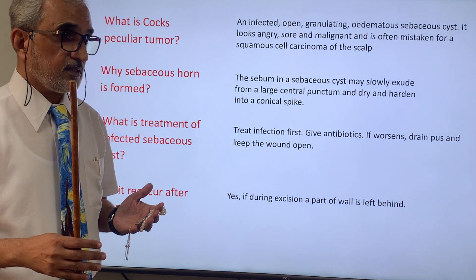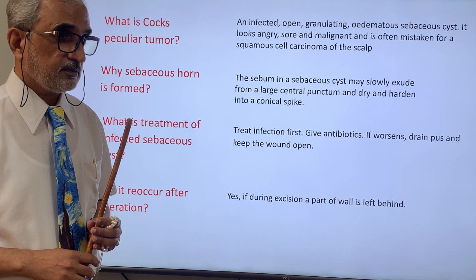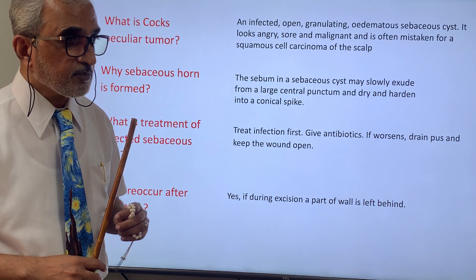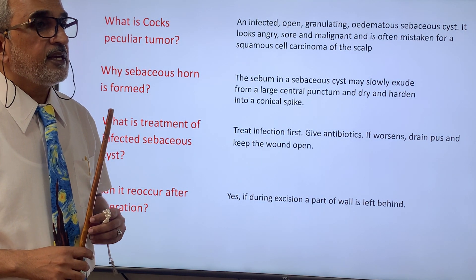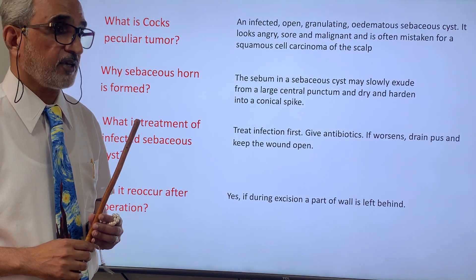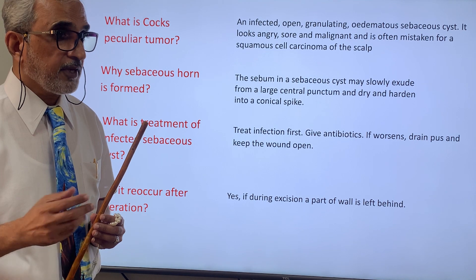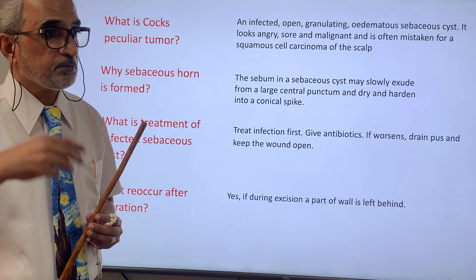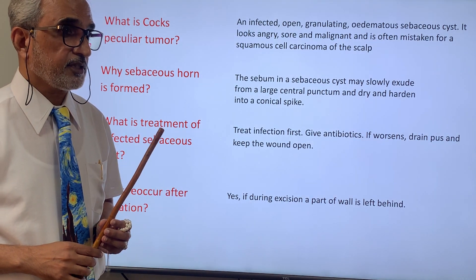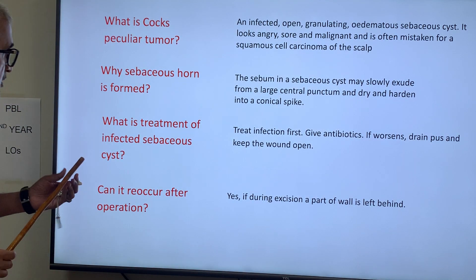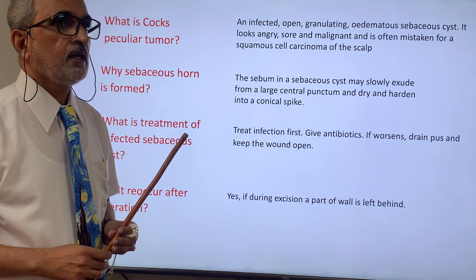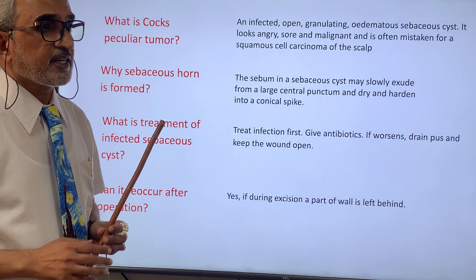Why is a sebaceous horn formed? Sebum is present within the sebaceous gland. Sometimes the sebum comes out through the duct, but because it comes out at a very slow speed it becomes dry, resulting in the appearance of a spike or protuberance that looks like a horn — and therefore it is called a sebaceous horn.